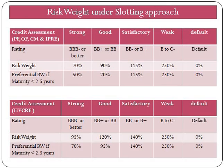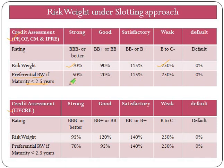Now let's look at capital requirements and risk weights for specialized lending. As you can see on the screen, risk weights are different for HVCRE and other specialized lending. For specialized lending other than HVCRE, risk weights range from 50% to 70% depending upon the rating. However, local supervisors can also allow banks to apply a preferential risk weight for exposures whose maturity is less than 2.5 years, applicable only for strong and good assessments.